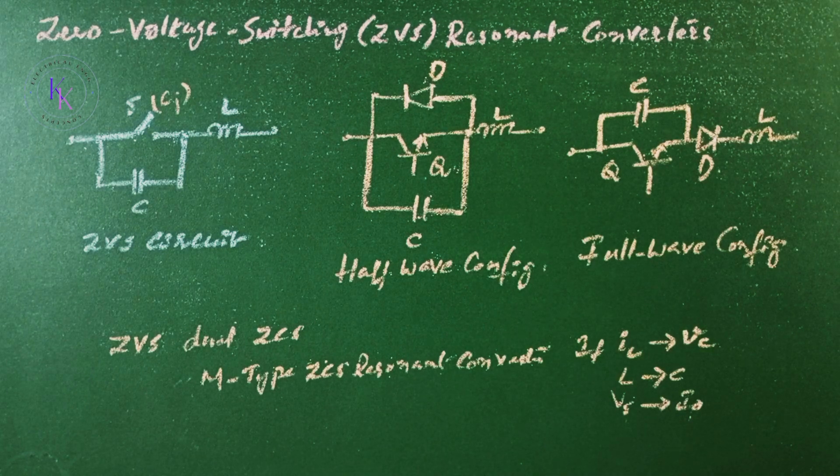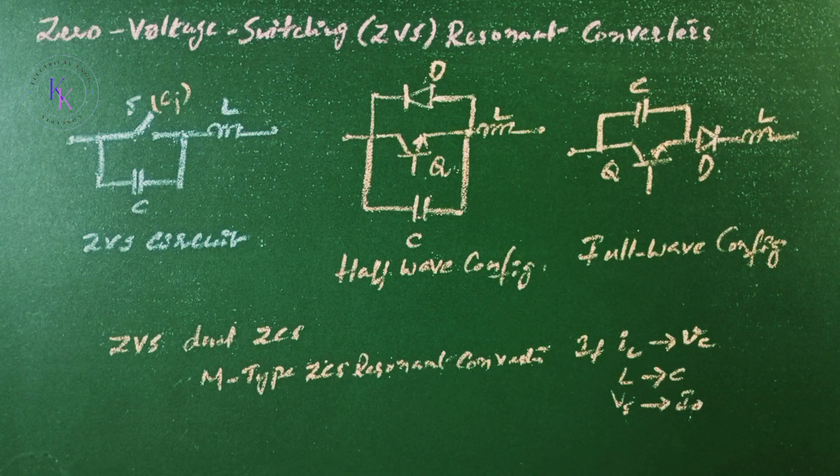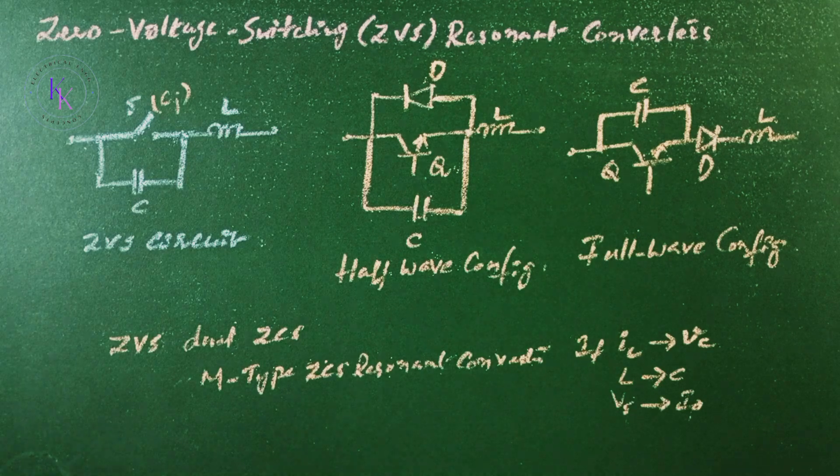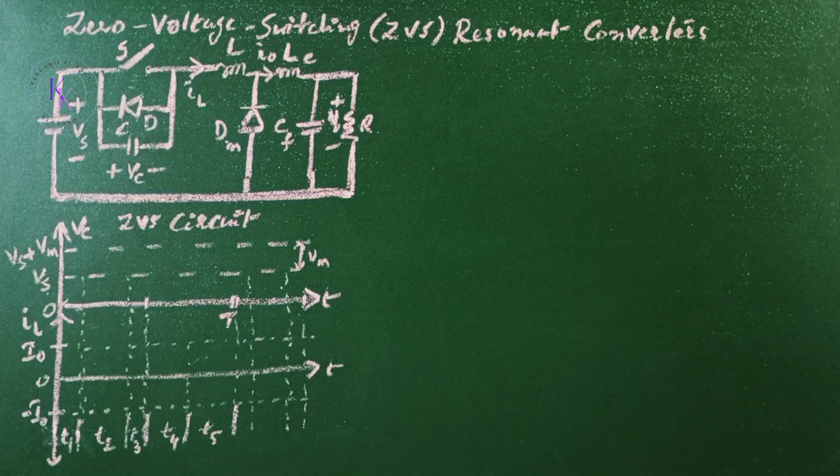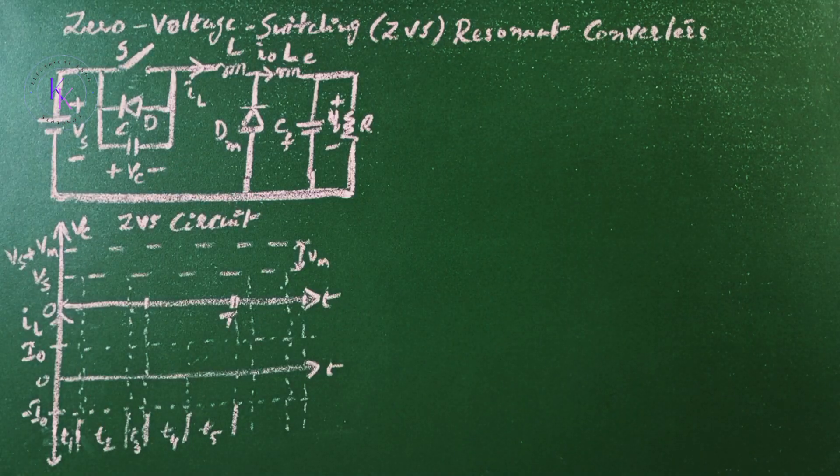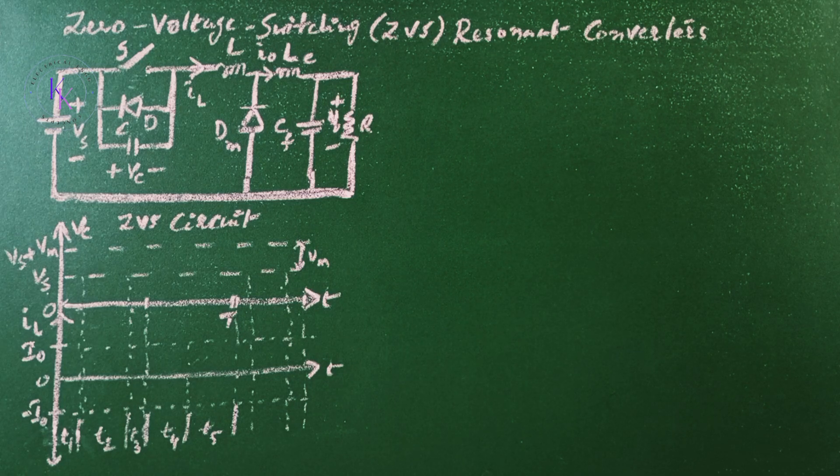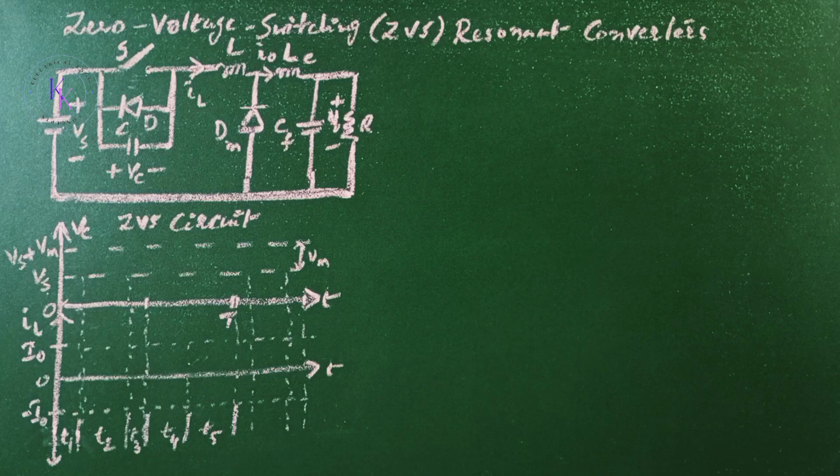Now let us see how ZVS resonant converter operates. Zero voltage switching resonant converter circuit is shown here and the circuit operation can be divided into five modes. We shall redefine the time origin equals to zero at the beginning of each mode.